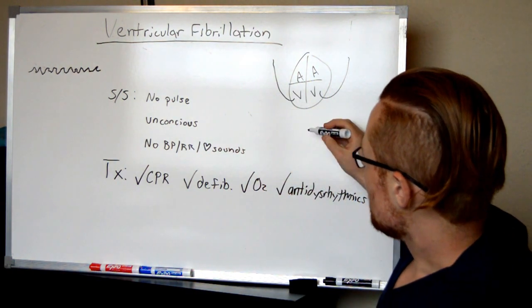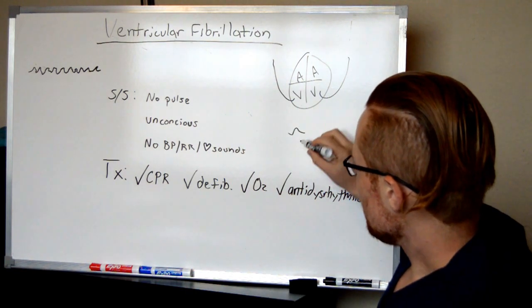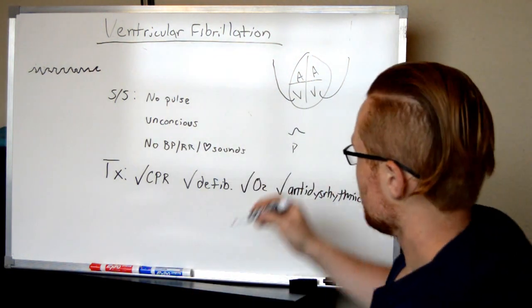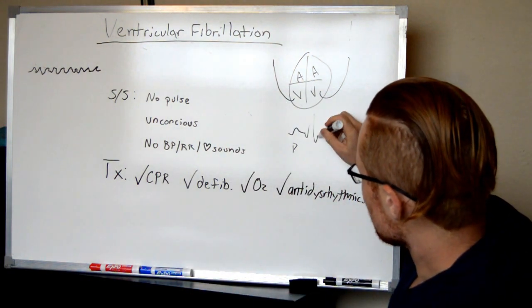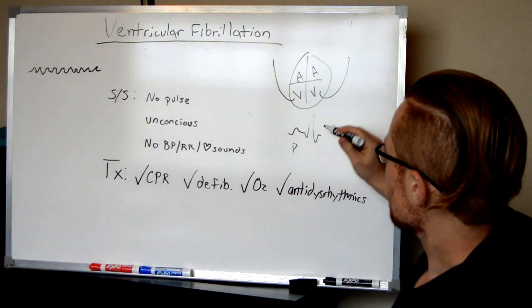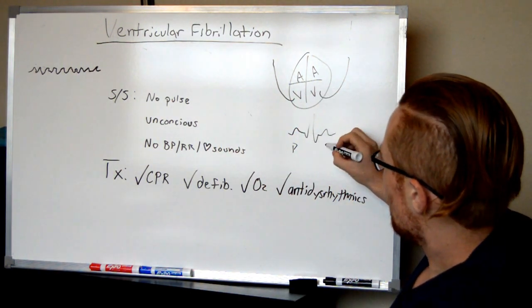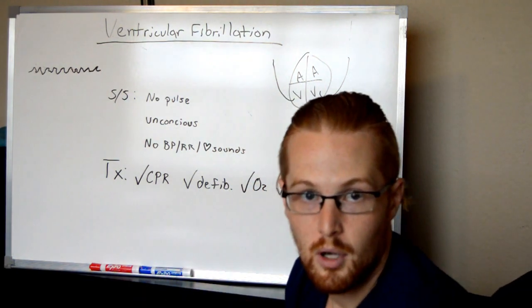So a normal EKG, you'll see a P wave, which is going to be the atrium contracting. You'll then see the QRS complex, which is the ventricle's contracting, and then you'll see a T wave, which is the ventricle's relaxing.